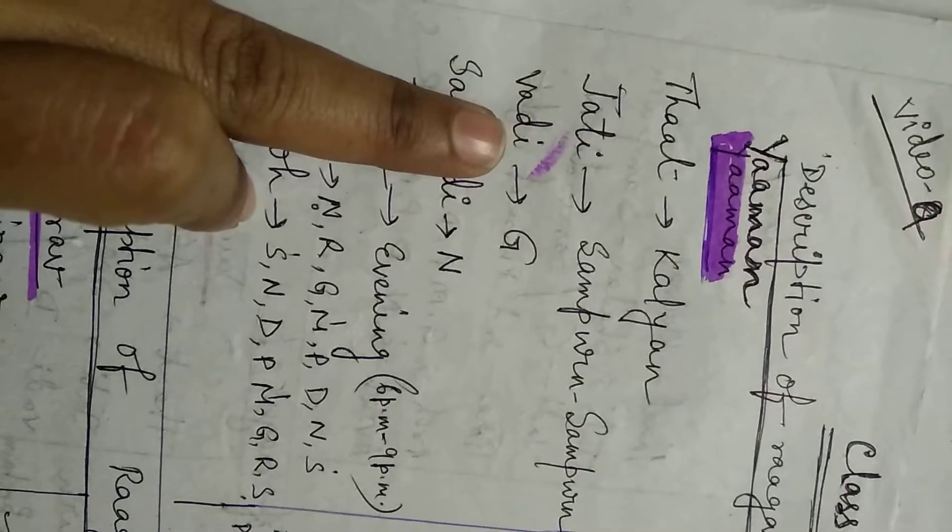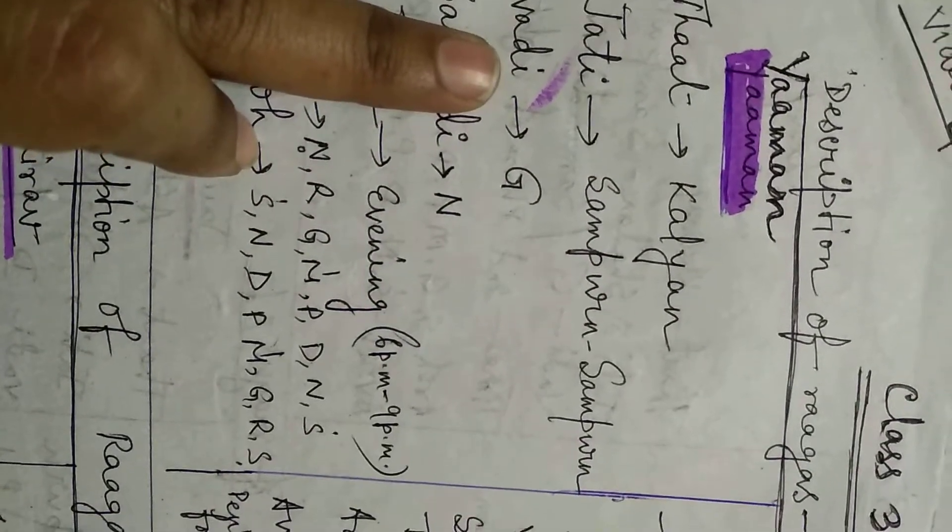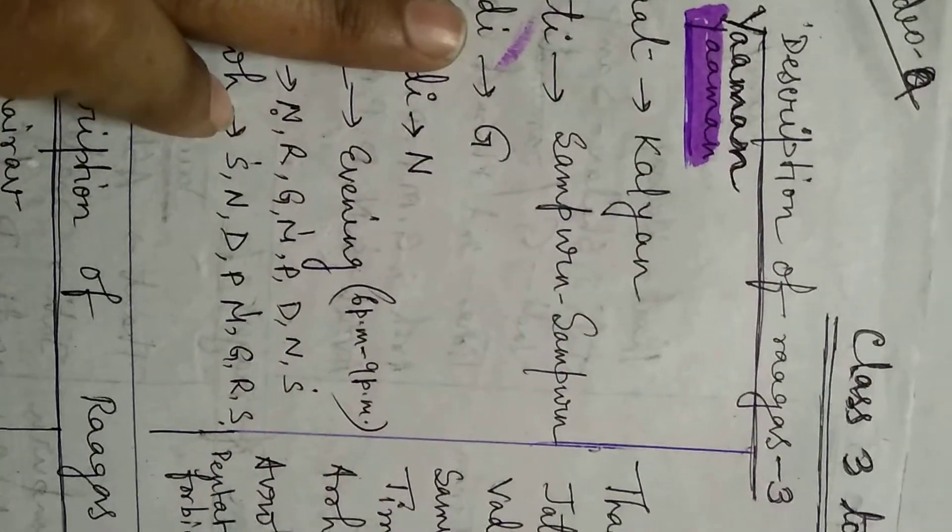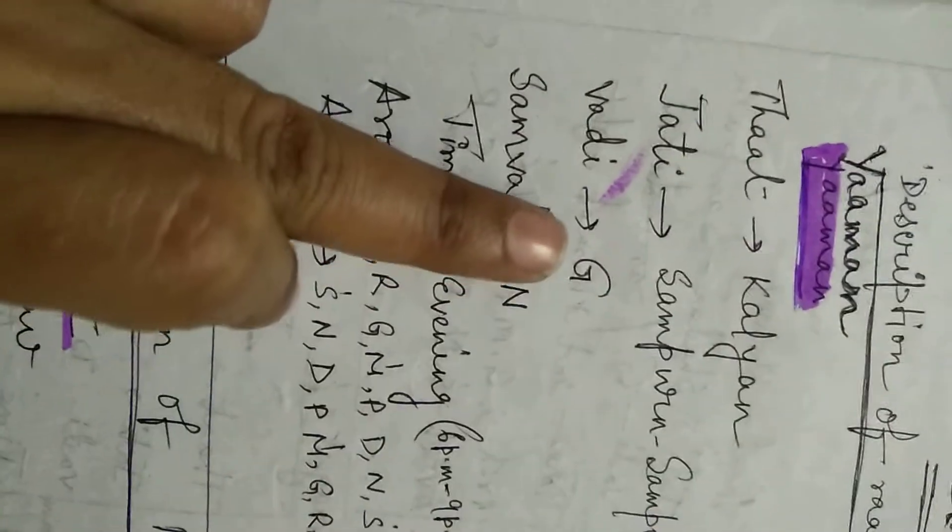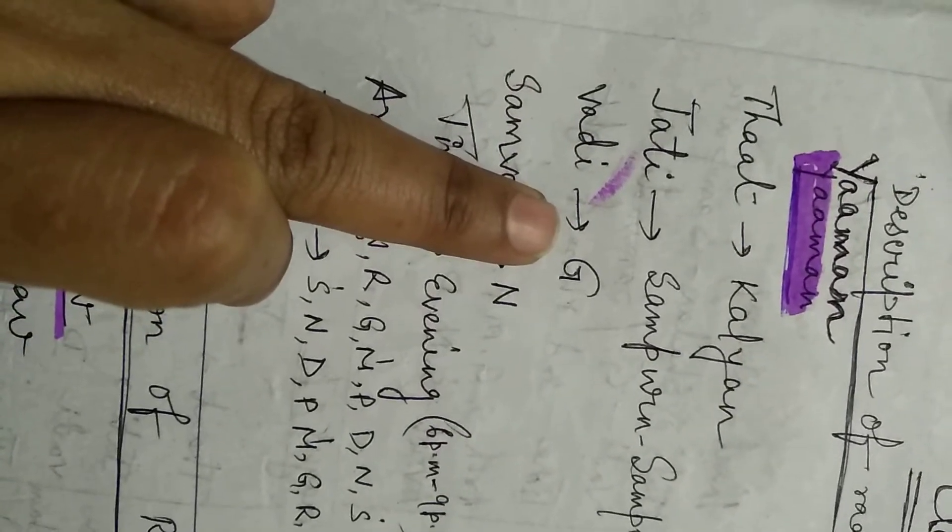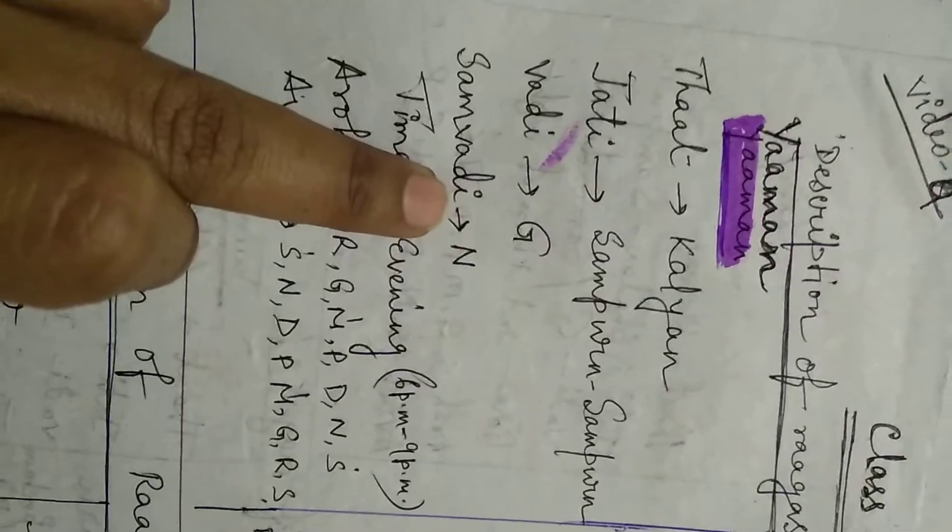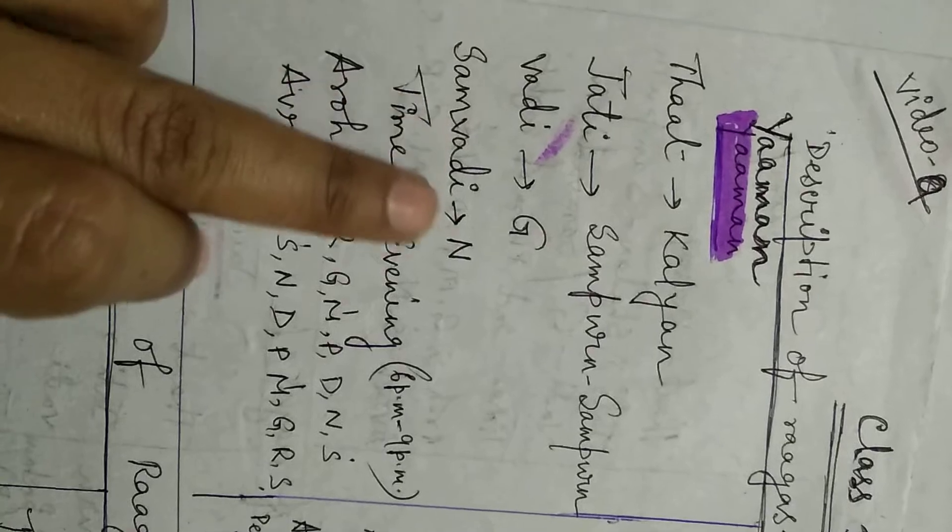Next, vadi. Vadi means the main svar of the raga. The raga is identified by focusing on these two notes: vadi and samvadi. This is the most important svar of the raga and this is the next important svar. Vadi is ga and samvadi is ni.